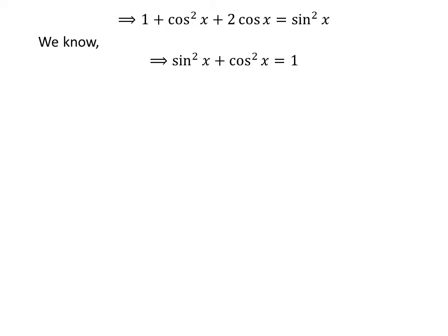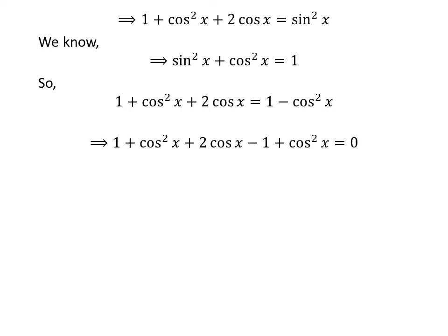We know the famous trigonometry identity: sin squared of x plus cos squared of x is equal to 1. So, applying this identity, we replace sin squared of x with 1 minus cos squared of x, giving us 1 plus cos squared of x plus 2 times cos of x is equal to 1 minus cos squared of x. Shifting the right-hand side expression to the left-hand side, we get 1 plus cos squared of x plus 2 times cos of x minus 1 plus cos squared of x is equal to 0.